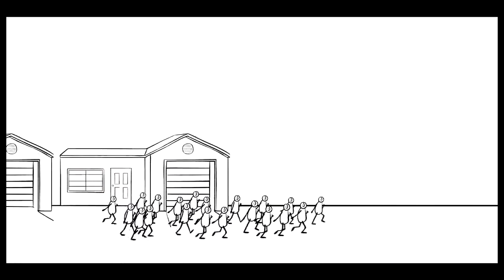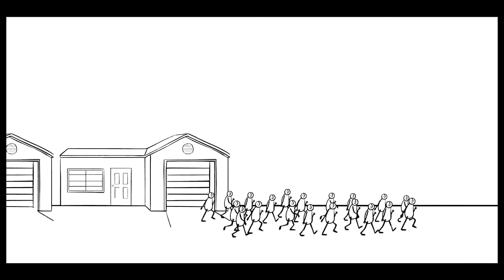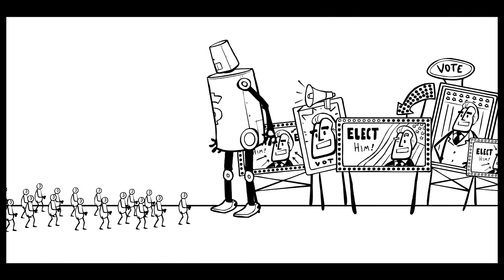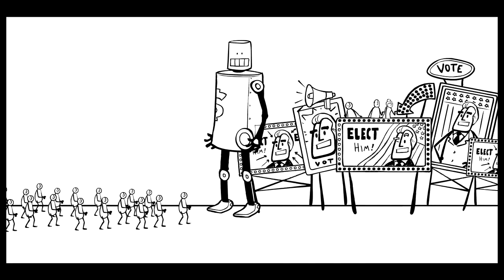So corporations are drowning out our voices, getting what they want, and our democracy is in trouble. But we can totally save it. People are so outraged by the Supreme Court decision that a massive response is mobilizing. Such a huge problem requires a huge solution. And we've got one. A new constitutional amendment.